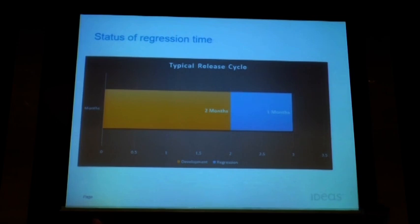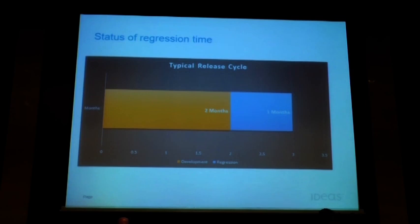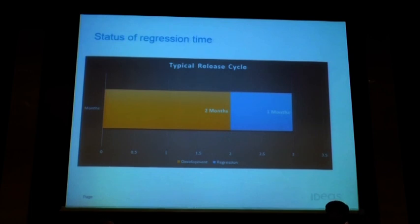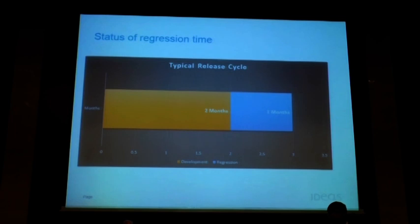Developers used to give weekly builds which testers would take and start testing the features ready for testing. This continued for a couple of months — a seven to eight week period where new features were being developed and tested. Then we reached the two-month milestone and said code freeze. All new features were now ready, reasonably stable, because they had been tested so far. Then testers would do regression testing.